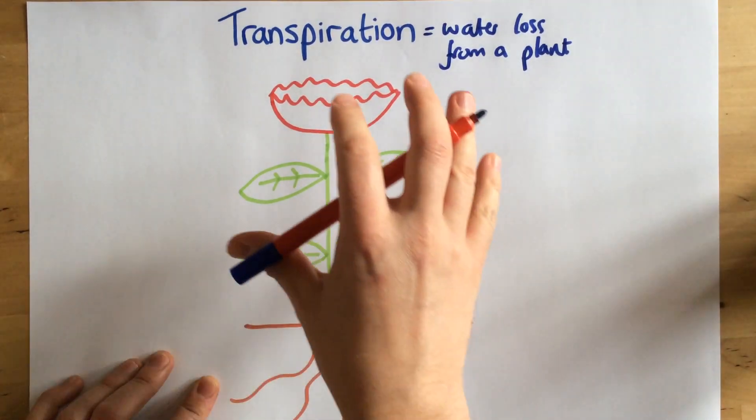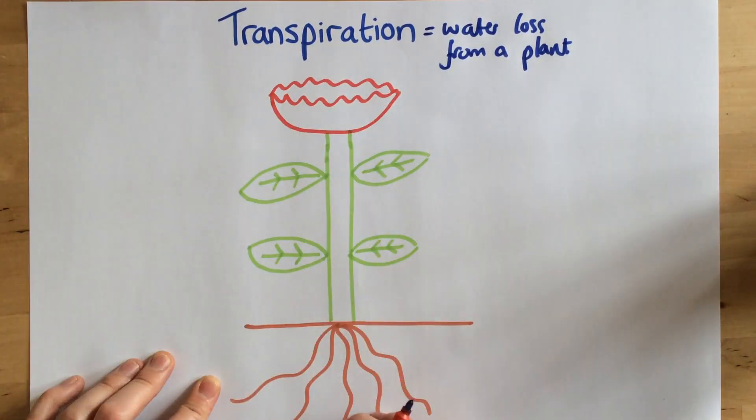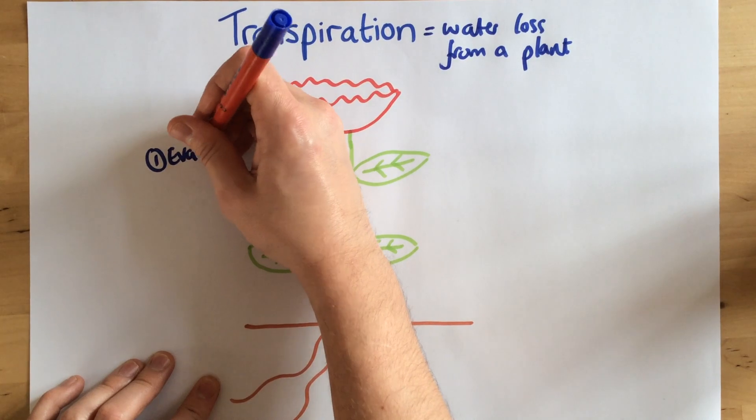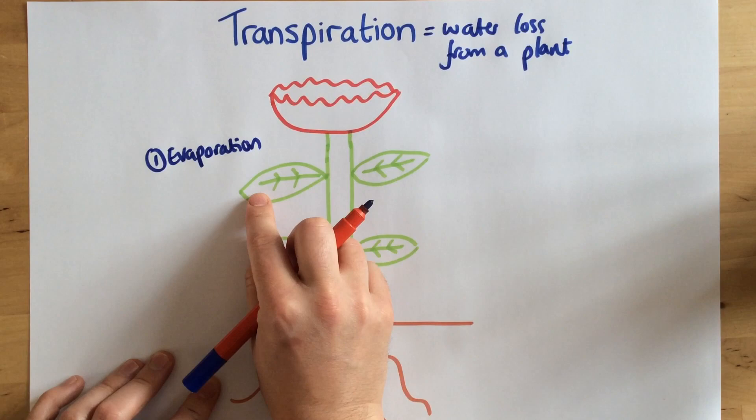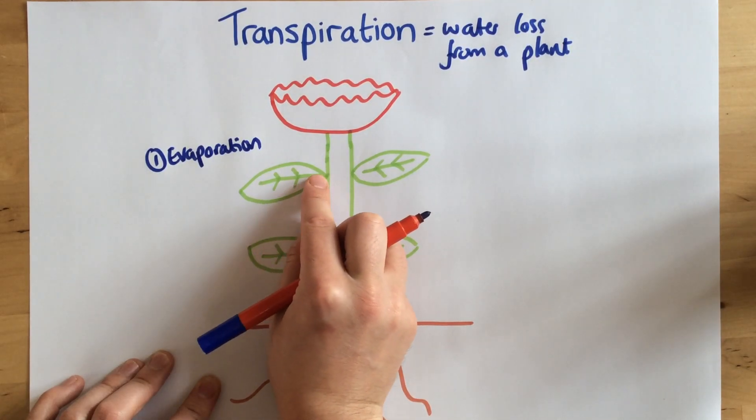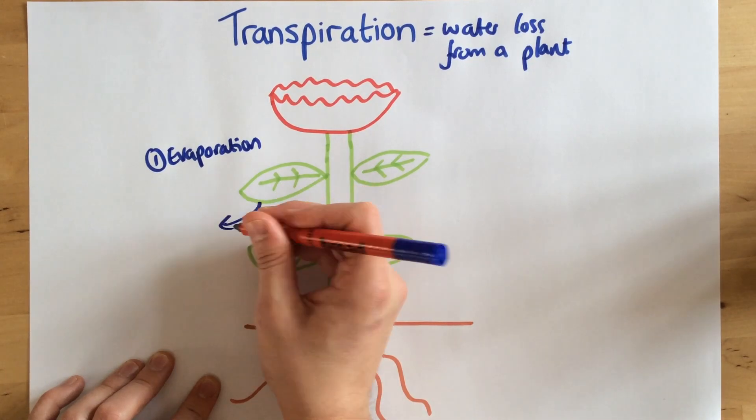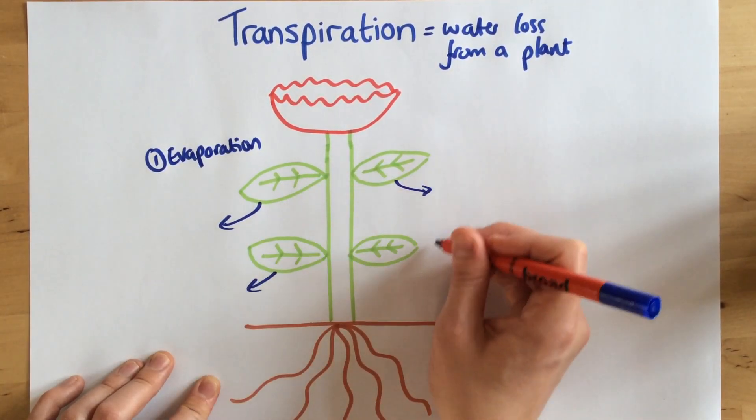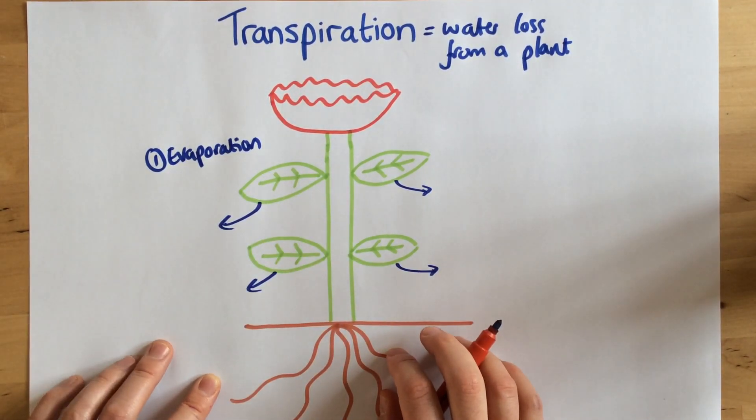So we're going to see on this plant here where transpiration is affecting it. First of all, we have the idea of evaporation of water occurring. Within the leaves, at the bottom of the leaves, there are these tiny pores called stomata, and so water evaporates and diffuses out of all of these leaves. That's the first step in the transpiration process.